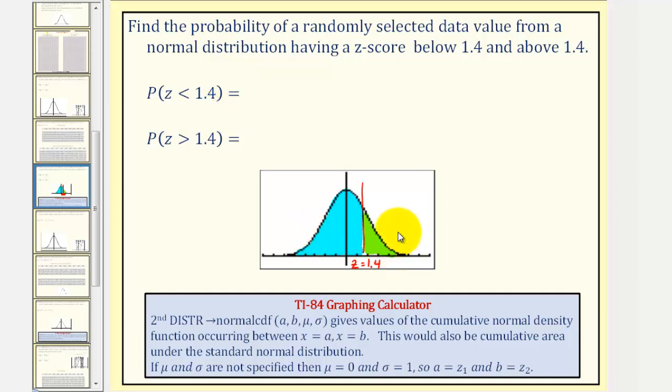Instead of using the z-score table, we can use a TI-84 graphing calculator to determine these probabilities. Using the normalCDF feature, we enter a, b, μ, σ. This gives the values of the cumulative normal density function occurring between x equals a and x equals b. If μ and σ are not specified, then μ equals 0 and σ equals 1, and therefore a and b would be the lower and upper bound z-scores.